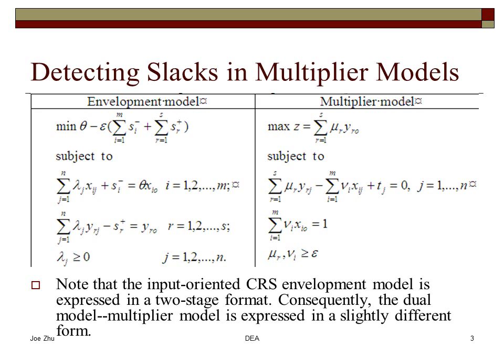So the first stage, you calculate the efficiency, and then the second stage, you fix the efficiency that you calculated and then try to maximize the sum of all the slacks. You should never solve this model in a single linear problem by selecting a very small number in here. That's not the correct way to do it. The only correct way to do it is to solve this model in a two-stage process.